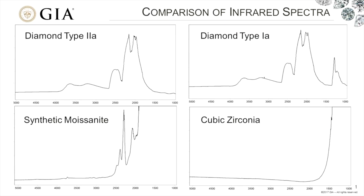There are some features over in the far right side of the 1A diagram — some peaks that are the nitrogen features. It only takes a second or two to record an infrared spectrum.